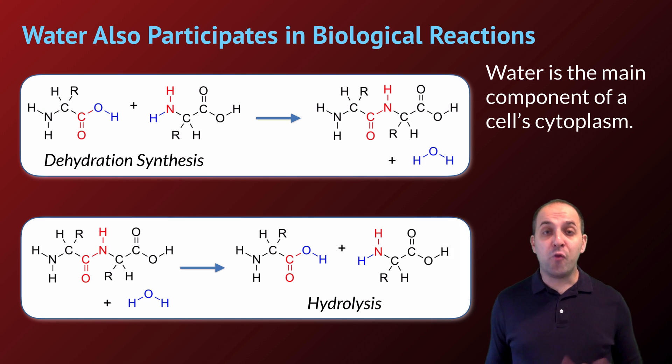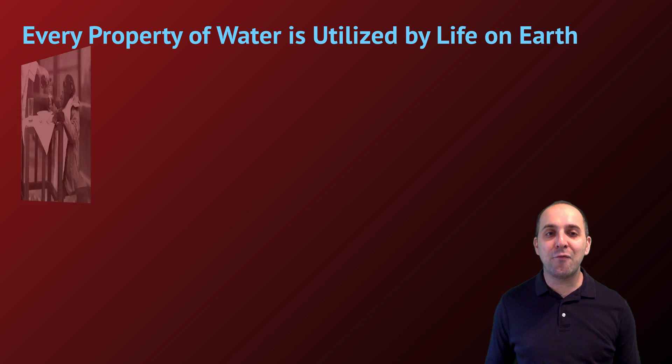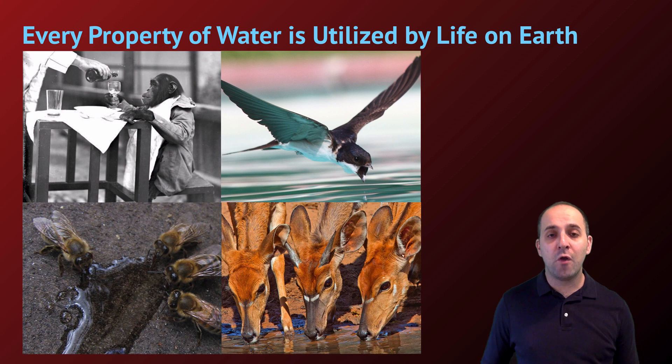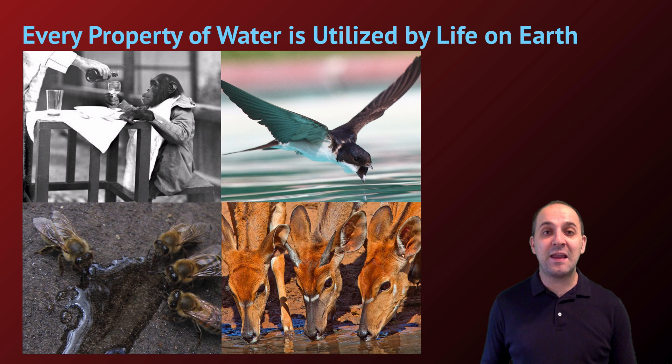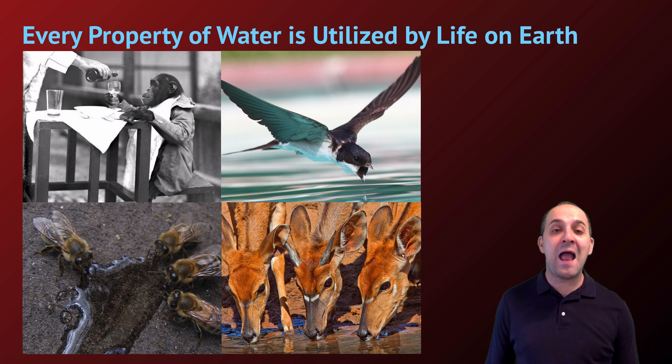It's actually a direct participant in the chemistry of biological systems. This dual role of water in both making conditions for life necessary and directly participating in life processes leads to the observation that living things are mostly made of water. At the cellular level, water is the main component of a cell's cytoplasm, and since all living things are made of cells, all living things are mostly water. Every property of water is utilized by life on Earth. Water has a lot of unique properties, and each one works together to make life possible. It's important to understand what those properties are, how they emerge from water's structure, and how living systems use them.